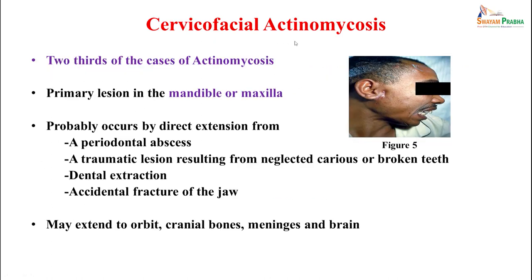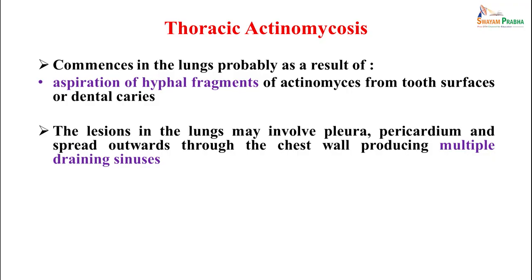Cervicofacial actinomycosis comprises two-thirds of all cases of actinomycosis. The primary lesion is in the mandible or maxillary region and probably occurs by direct extension from a periodontal abscess or a traumatic lesion from neglected caries, broken teeth, dental extraction, post-dental extraction, or post-accidental fracture of the jaw. They may extend to the orbit, cranial bones, meninges, and brain. Thoracic actinomycosis commences in the lungs as a result of aspiration of actinomyces from tooth surfaces or dental caries. The lesions in the lungs may involve pleura, pericardium, spread outward toward the chest wall producing multiple draining sinuses.